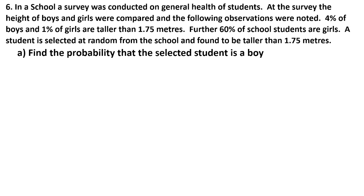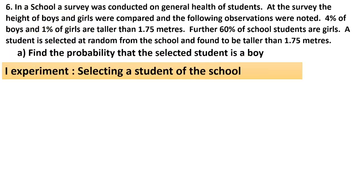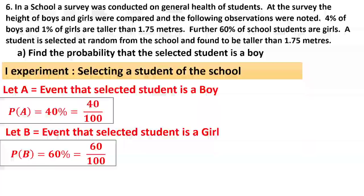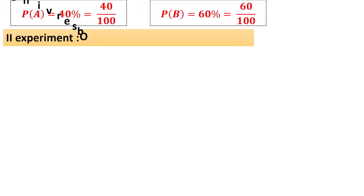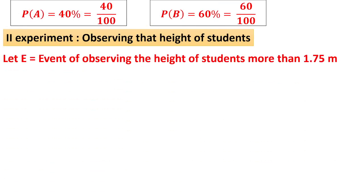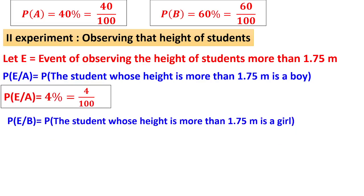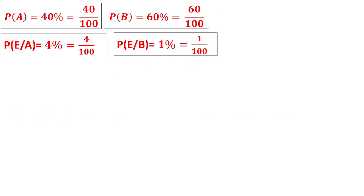Question number 6: In a school, a survey was conducted. Height of boys and girls were compared. 4% and 1% are taller. 60% are girls. A student is selected at random. Find the probability that the selected student is a boy. First check the experiment: selecting a student of the school. A is the event that selected student is a boy. 60% are girls, therefore 40% are boys, so P(A) = 40/100. Selected student is a girl, P(B) = 60/100. Second experiment is observing the height. E is the event that student is more than 1.75m. P(E|A) is 4/100. P(E|B) is 1/100.